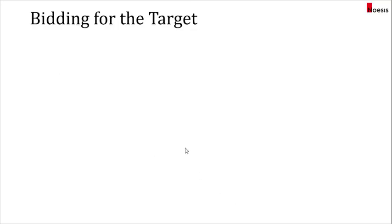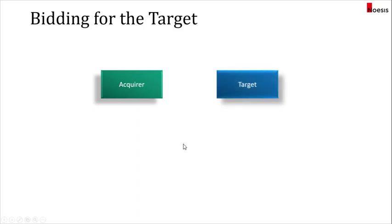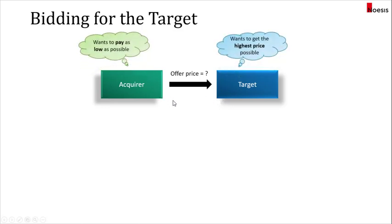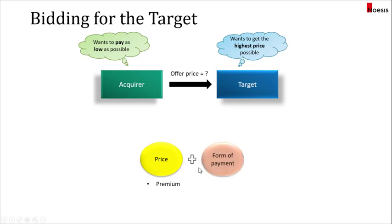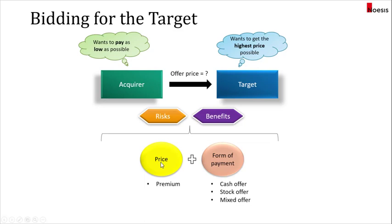In every merger and acquisition deal, there will be an acquirer and a target, and the acquirer will have to make an offer to the target, and the offer must be attractive enough. While the acquirer wants to pay as low as possible, the target will want to negotiate the highest price possible. The price that the acquirer offers must include a premium, and they will also have to propose the form of payment. The payment can come in the form of a cash offer, a stock offer, or a mixed offer comprising cash and stock. Depending on the choice of price and form of payment, it will impact the distribution of risk and benefits to both the acquirer and the target.